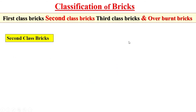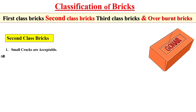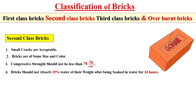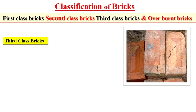Now, let's look at second class brick. Second class bricks have some characteristics: small cracks are acceptable, as you can see here. Second class bricks are the same size and color as first class bricks. The compressive strength should not be less than 75 kg per square centimeter. The brick should not absorb more than 25 percent of water after being soaked for 24 hours. Second class bricks are used in unimportant situations or at places where the masonry is to be plastered.